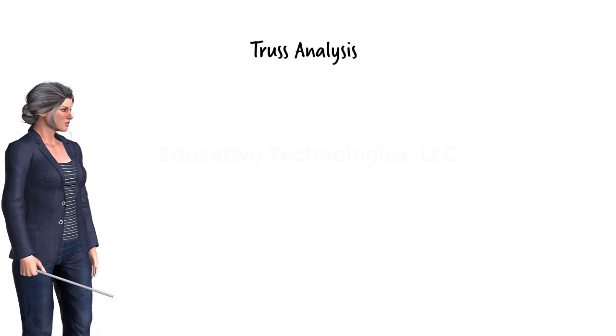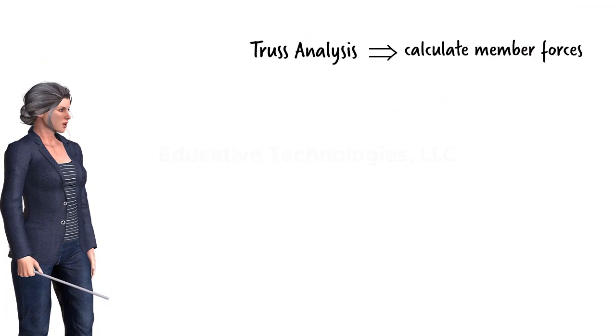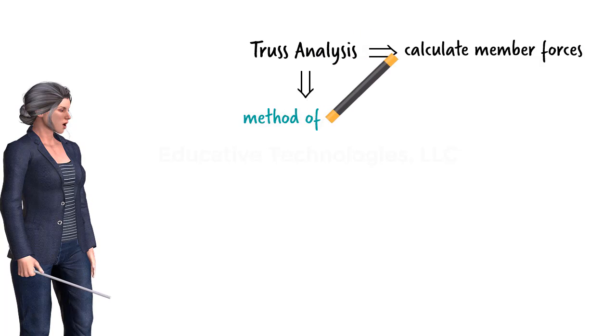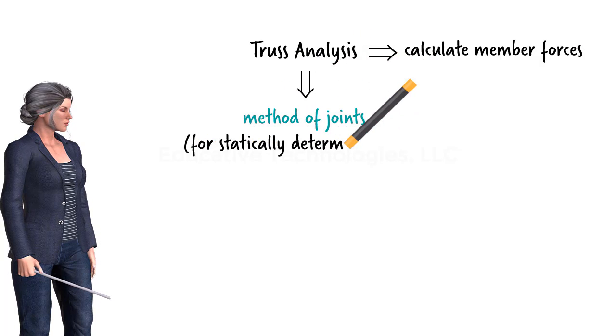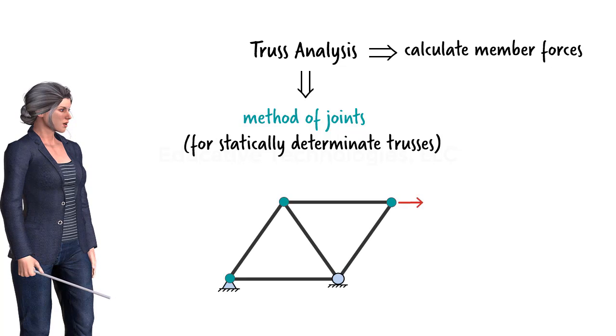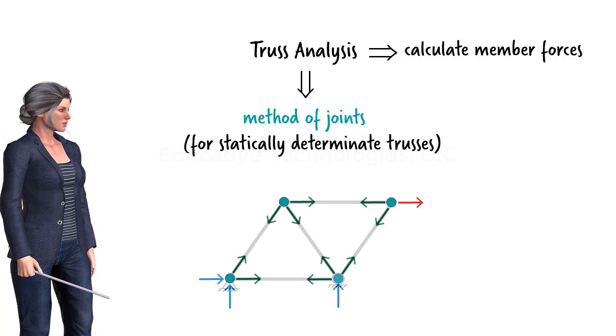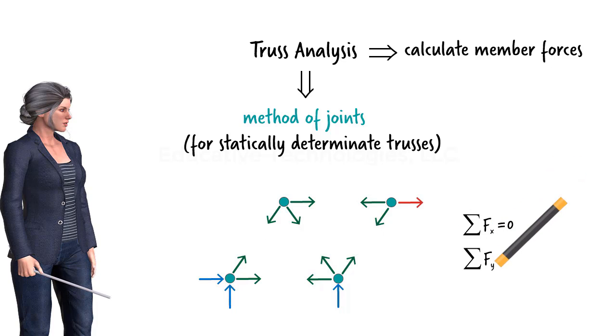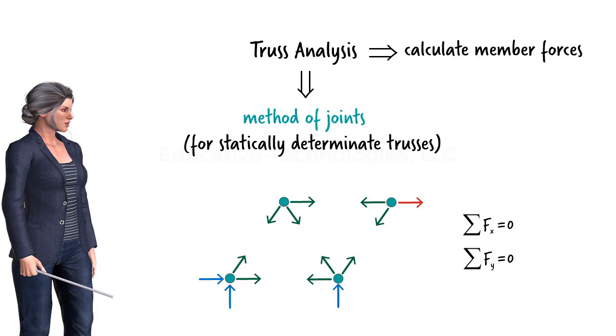The purpose of a truss analysis is to calculate the axial force in each member. For statically determinate trusses, we can use the method of joints to analyze the structure. This method involves first isolating the joints of the truss, then applying the equilibrium equations to each joint in order to determine the unknown member forces.